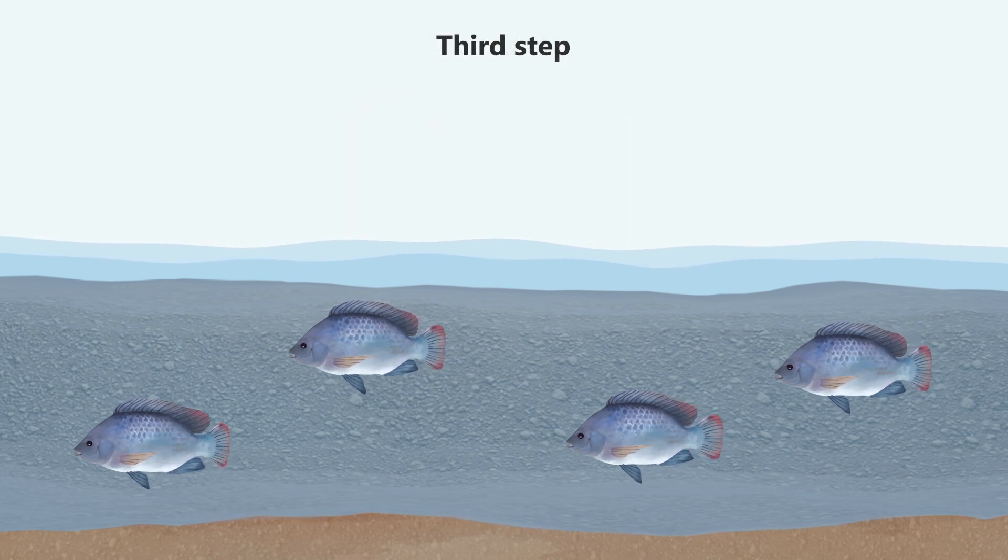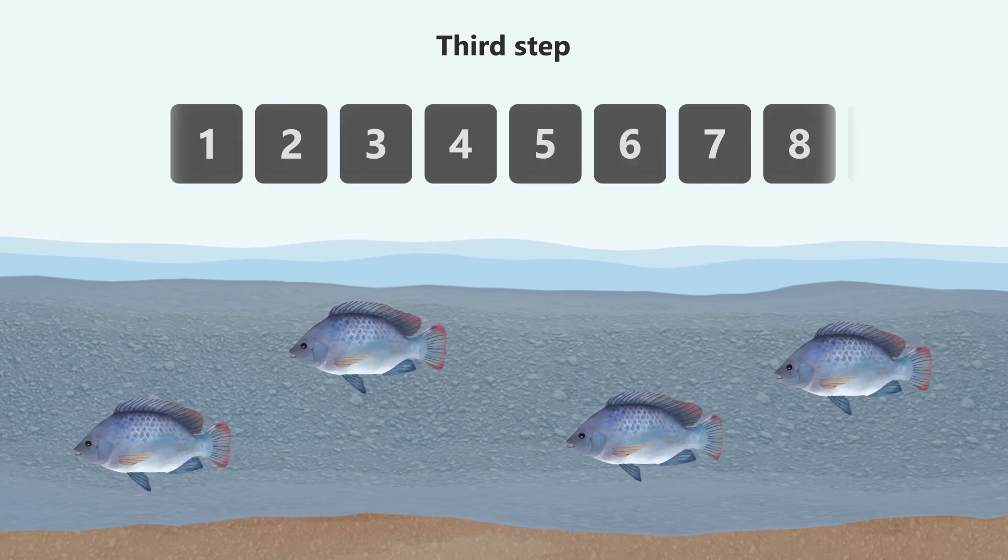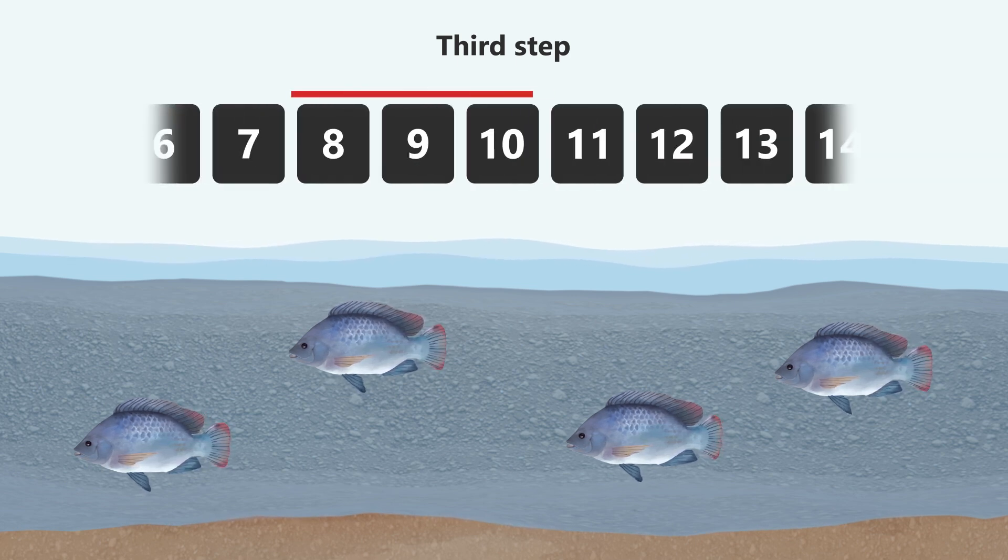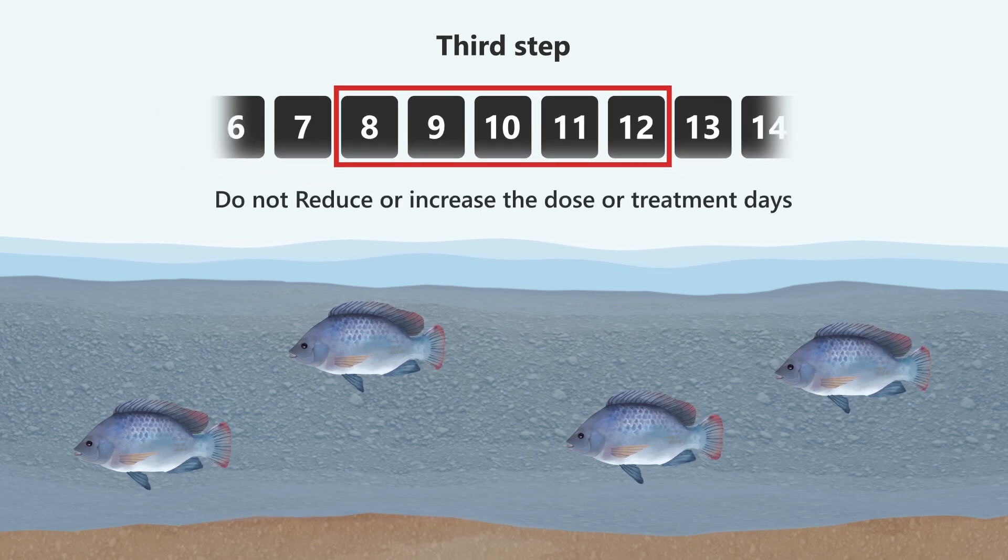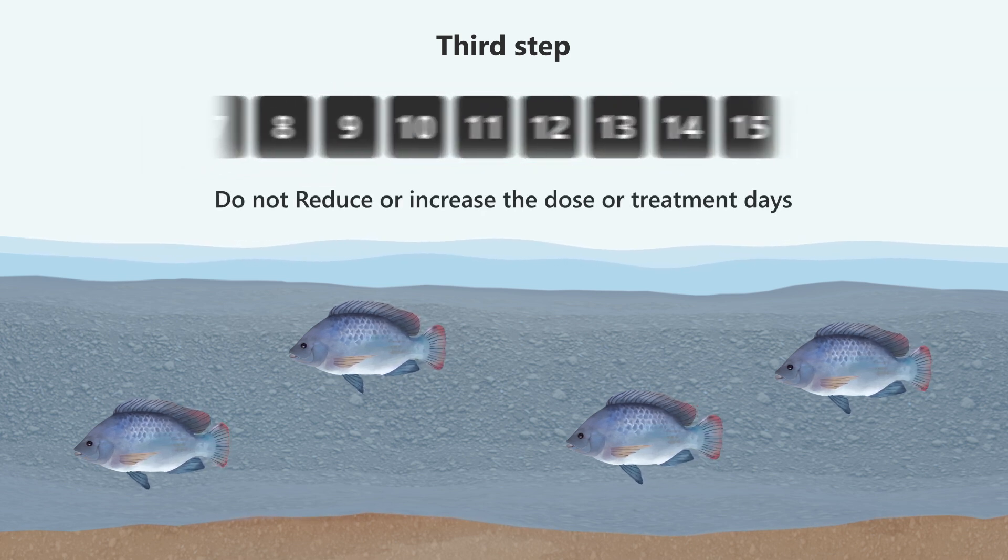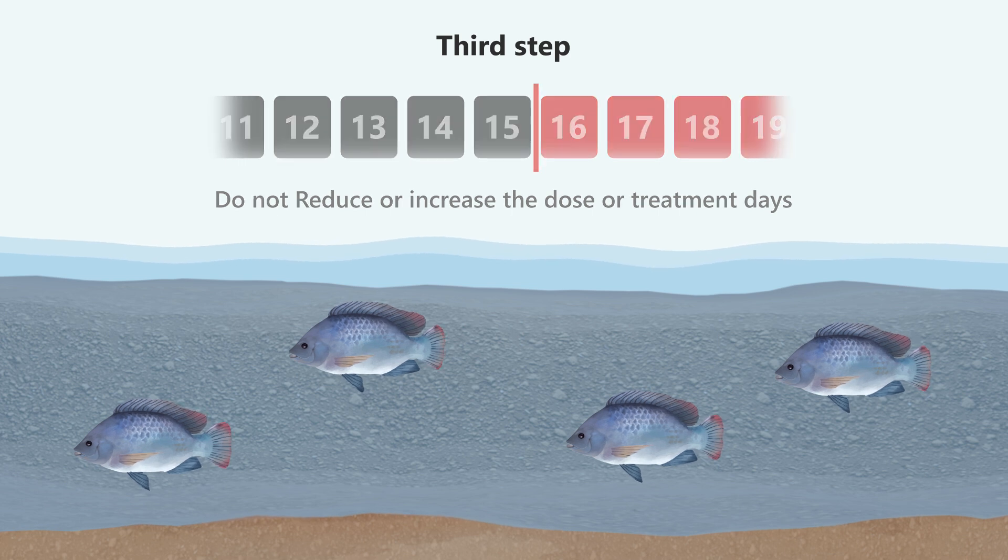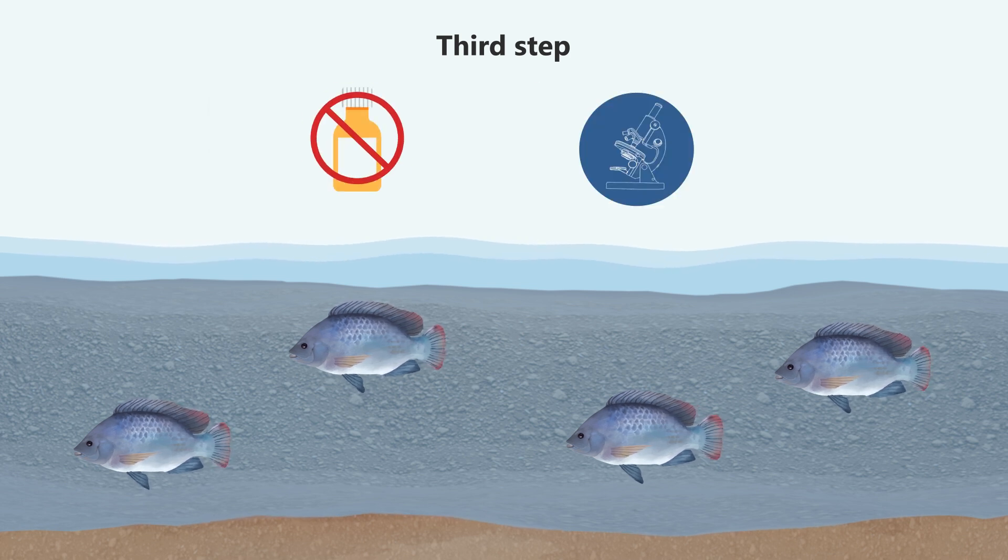Finally, it is essential to complete the recommended treatment. The duration of a treatment is typically around 8 to 12 days at the recommended dose. Do not reduce or increase the dose. If, after 15 days of treatment, there is no improvement, stop the treatment, analyze the fish again, and re-diagnose.